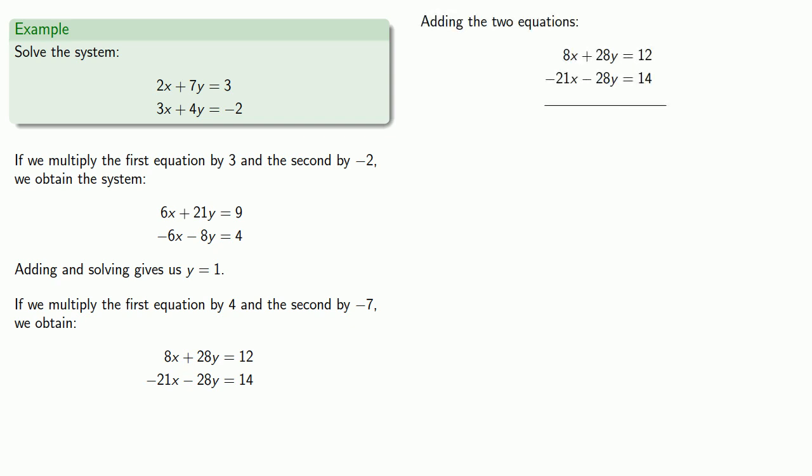We add the two equations together, which gives us -13x = 26. The left side is a product, -13 times x. We divide and get x = -2 as our solution.